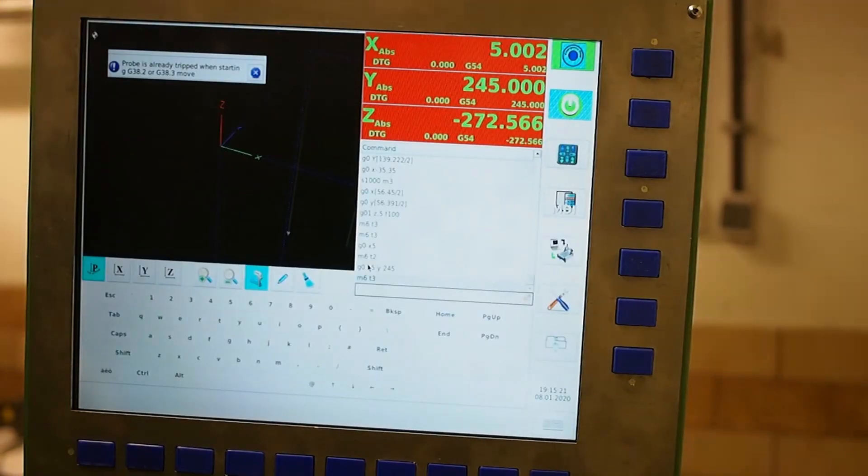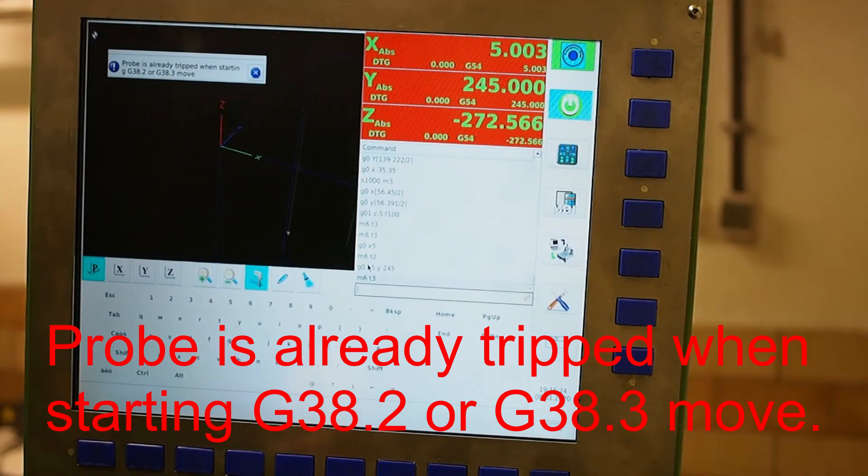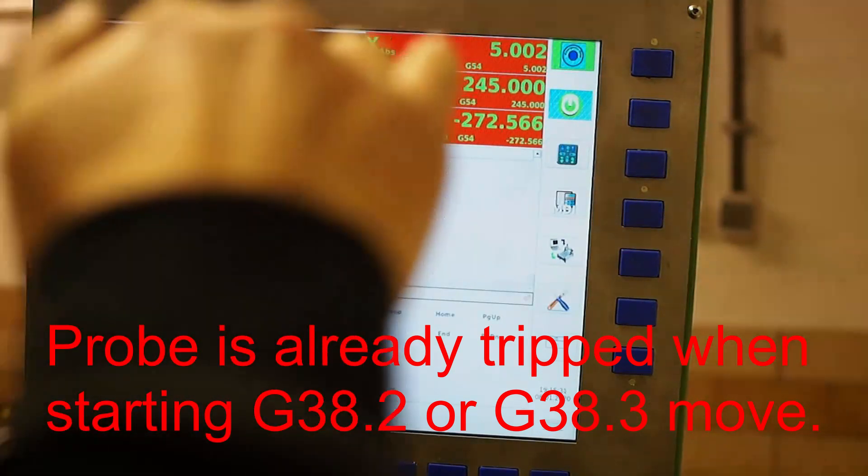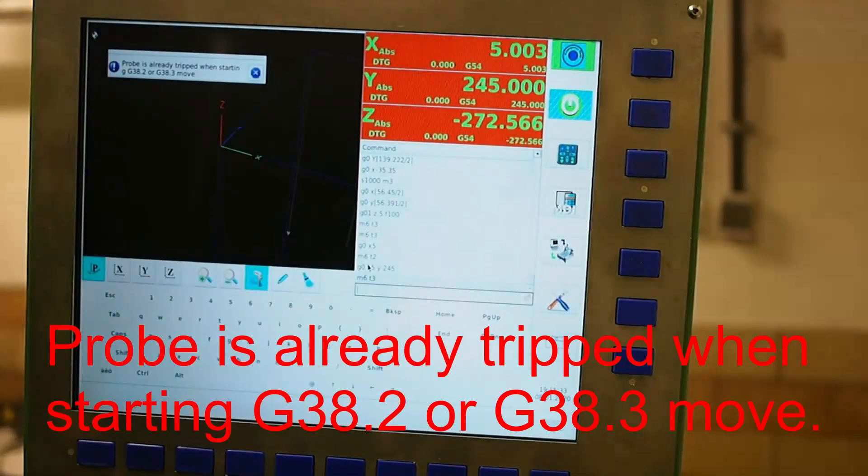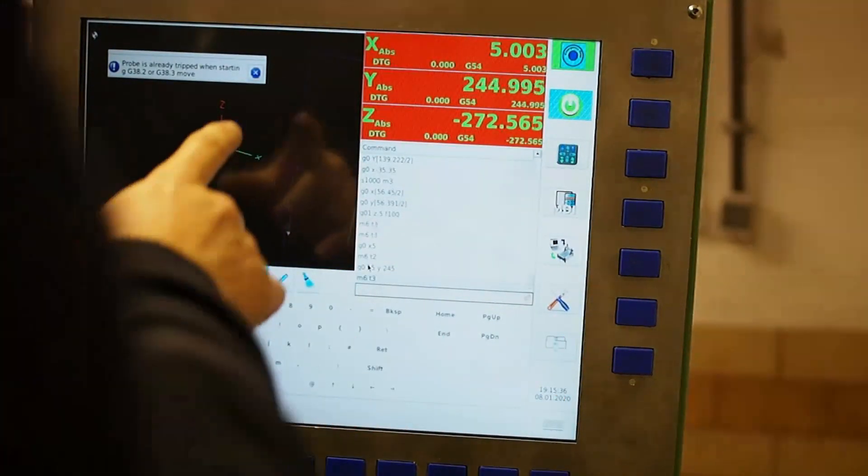So it does go down, it does trip the probe, but I get an error message there. It's working better than it was. You could feel it stop its acceleration before it hit the probe, but I'm not sure what this message means.